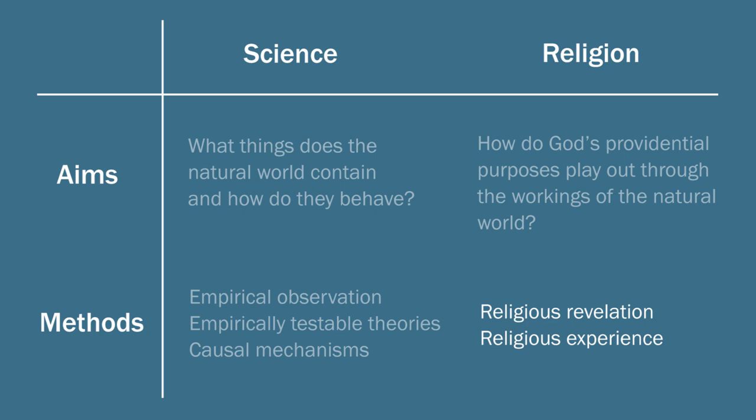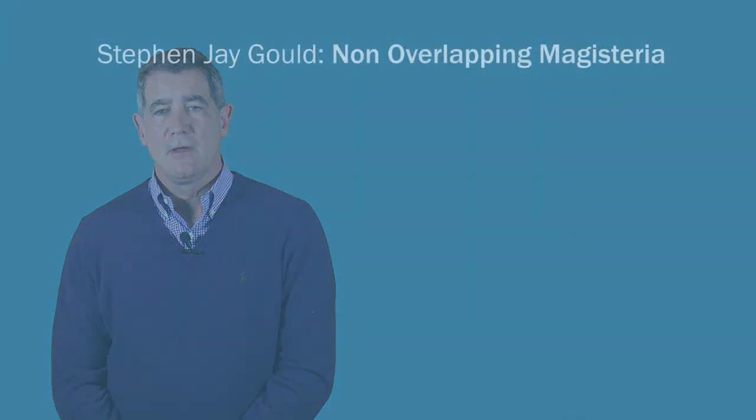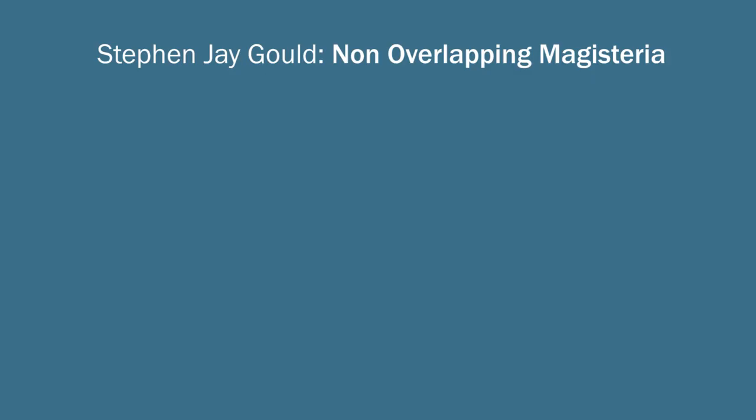This second version, according to which science and religion are non-conflicting in principle, has been defended probably most famously by the now late Harvard evolutionary theorist Stephen Jay Gould. And according to Gould, science and religion represent what he called distinct magisteria, or magisteria are sources of teaching authority.